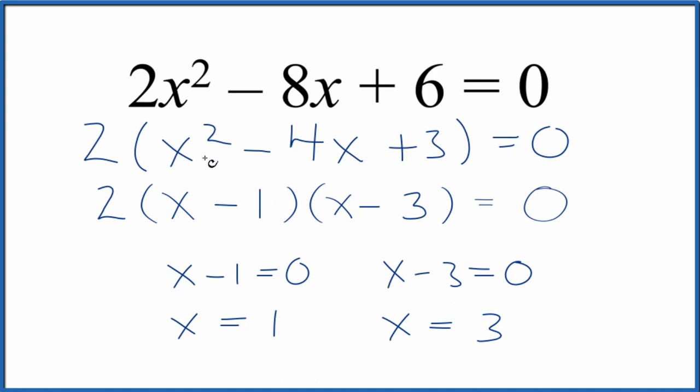If we put 1 in this equation, all of this side will equal 0. Likewise, if we put 3 in for x here, this would all equal 0 as well. So these are correct. And if you use the quadratic equation, you'd get the same numbers.